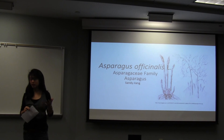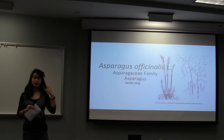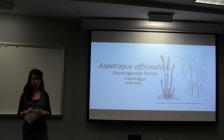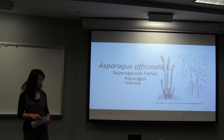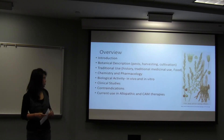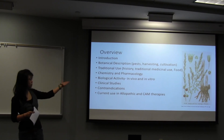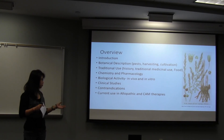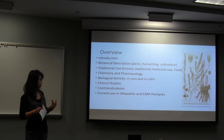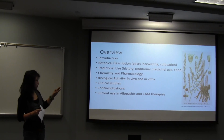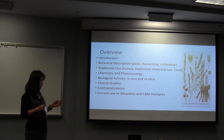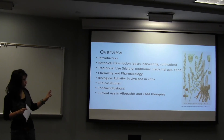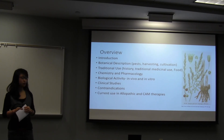Asparagus is a very common plant — most of you have actually seen it on your dinner table. You can find it in stores. It's part of the Asparagaceae family. There are actually 200 species known, but we're familiar with one. Today I'll be giving a brief overview of where it came from, botanical description including pests, harvesting, and cultivation, traditional uses, pharmacology, biological activity including in vivo and in vitro studies, clinical studies, contradictions — meaning anything you should be aware of when eating asparagus — and its current use in allopathic and complementary alternative medicines.